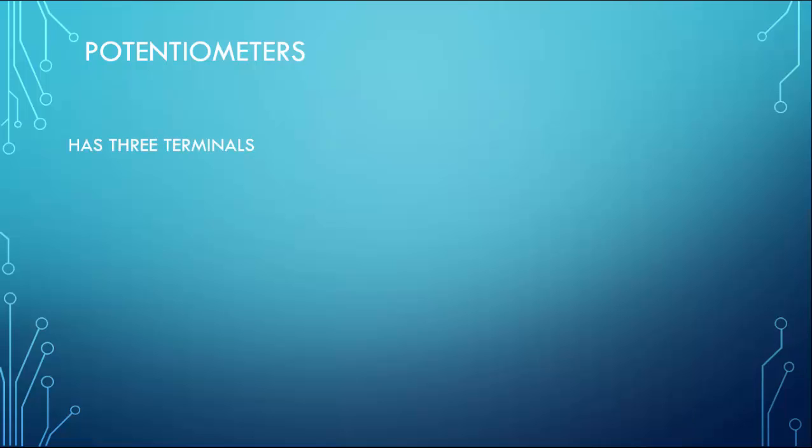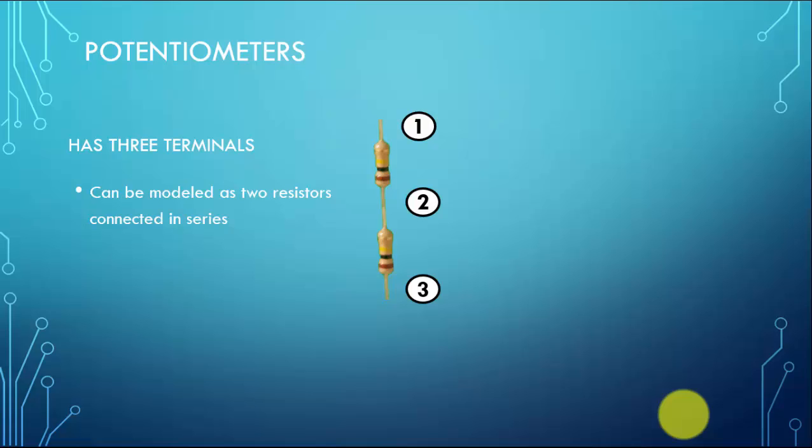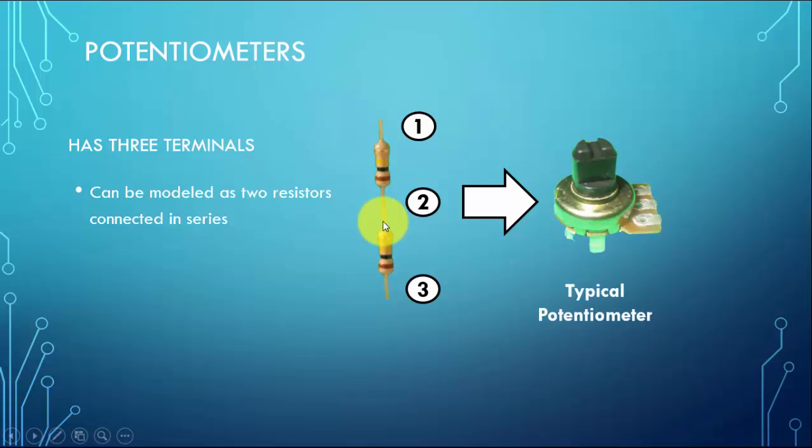Potentiometer has three terminals and it can be modeled as two resistors back-to-back. We have terminal shown here for the model, but for a typical potentiometer we have it shown here with an adjustable knob and its corresponding points.